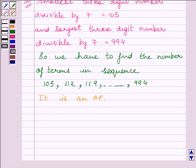We can write it is an AP with first term a equals 105 and the common difference d equals 7. We know the nth term of an AP is given by a_n equals a plus (n-1) multiplied by d.